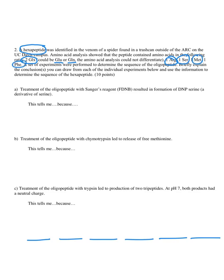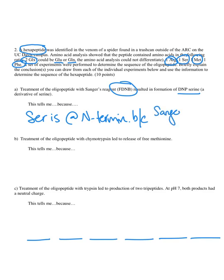You do a set of experiments to figure out the sequence and for this problem you're asked to work through it stepwise. The first clue is treatment of the peptide with FDNB and you get a derivative of serine. This tells you that serine is at the N-terminus because Sanger identifies the N-terminal amino acid. I'll put serine there.